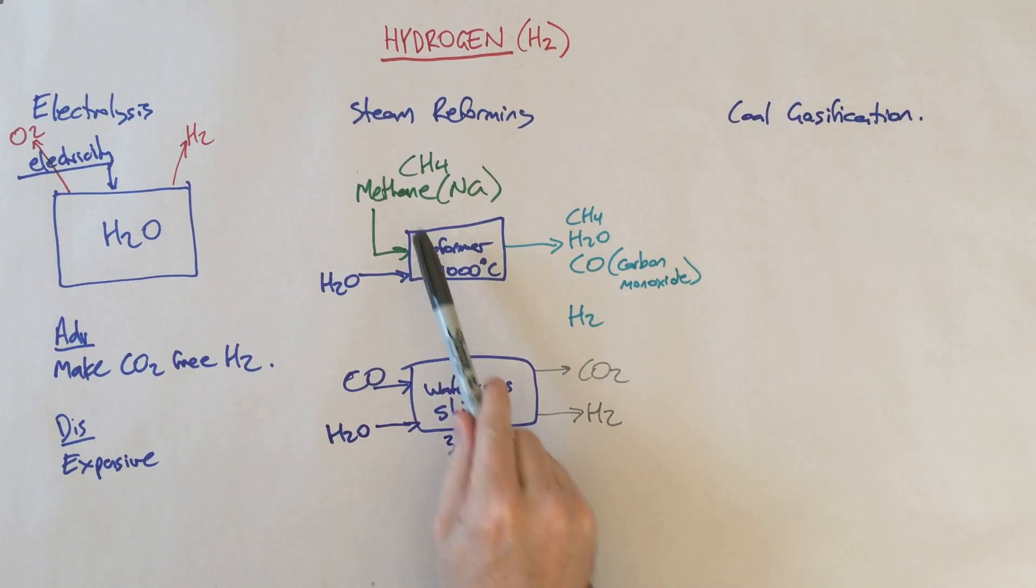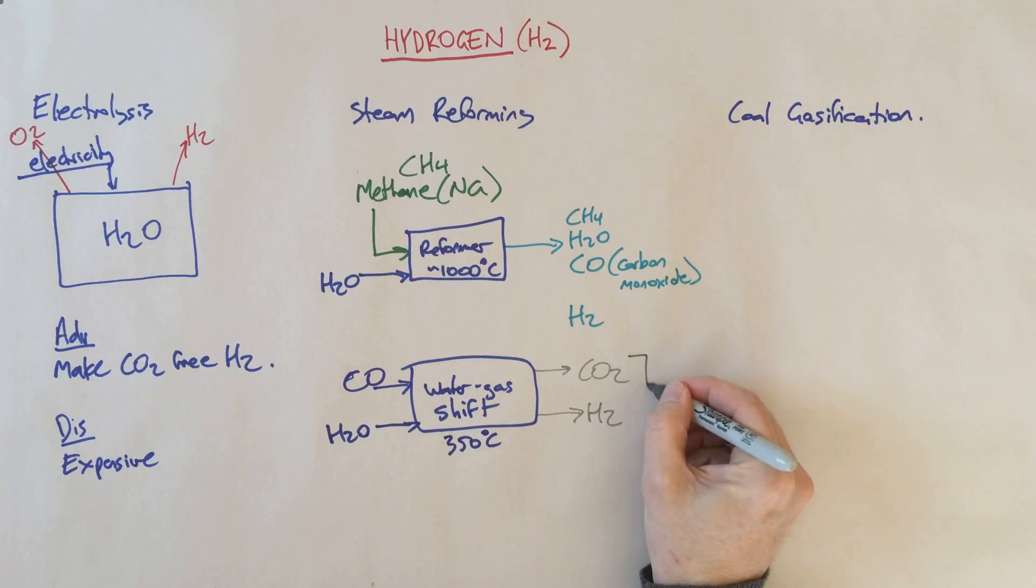What you can see here is that we started with natural gas and methane, reacted it with water in a reformer, and then reacted what comes out with a little more water. We've ultimately turned those into carbon dioxide and hydrogen.